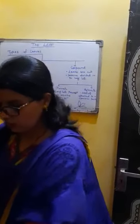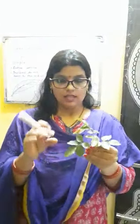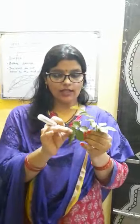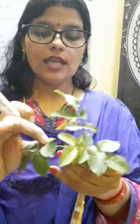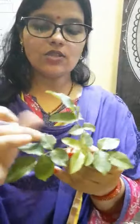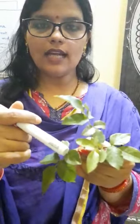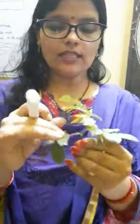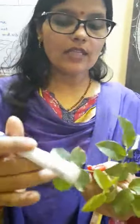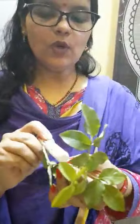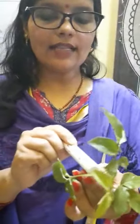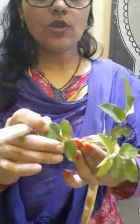Here is a rose leaf. You can see these apparent leaves present over here are actually not leaves but leaflets, because in the axil of these leaflets, no axillary bud is present. But you can see the presence of stipule and axillary bud at the base of the whole structure.